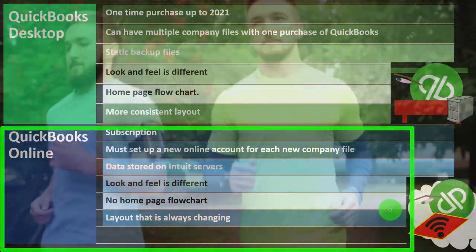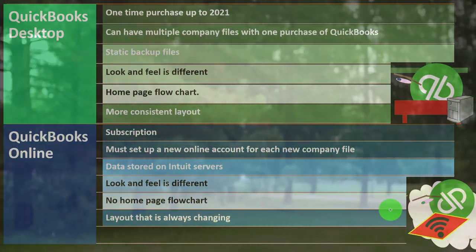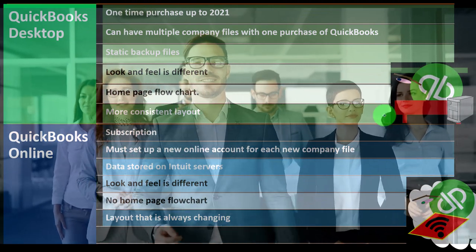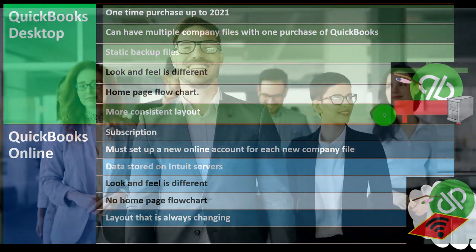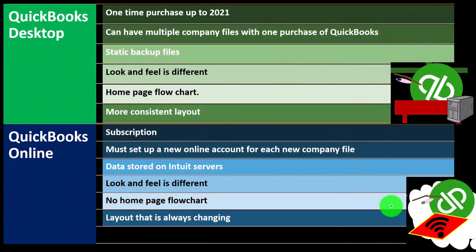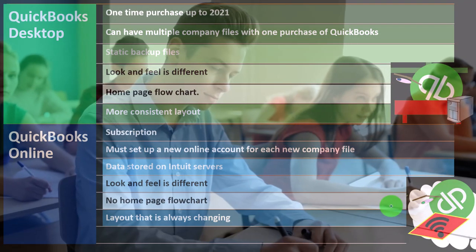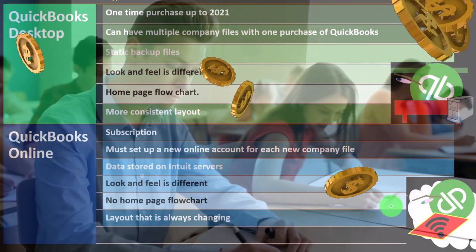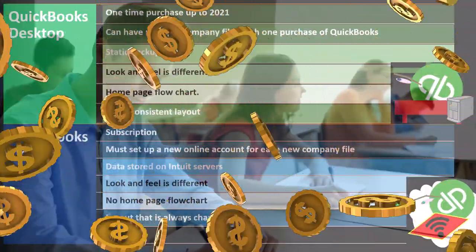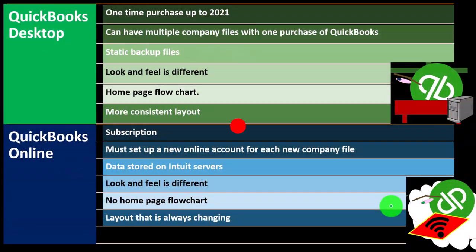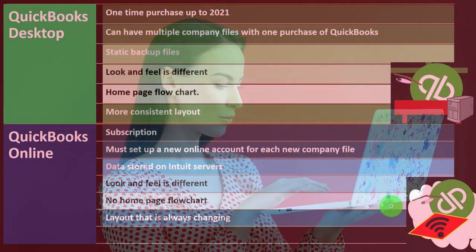The online version also tests new terminology. The desktop version tends to use more professional accounting terminology, which people working in accounting departments tend to prefer. The online version uses trendier terms - for example, using 'Get Paid' instead of formal accounting language. While that can be more approachable, it's less professional-sounding and can be confusing when terminology changes from one day to the next as part of ongoing A/B testing.